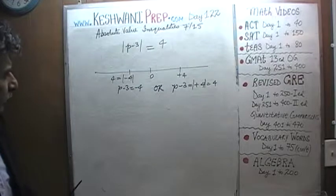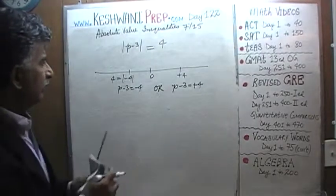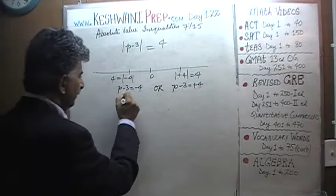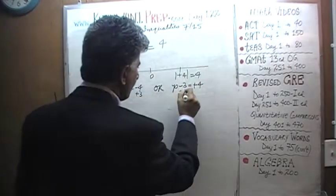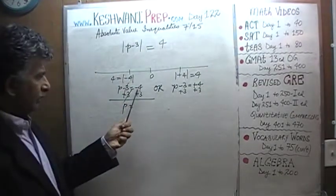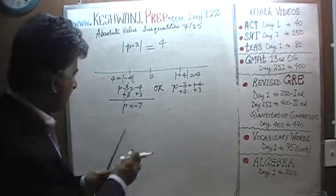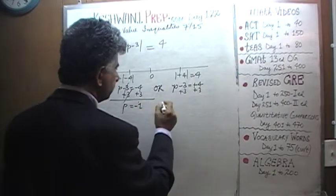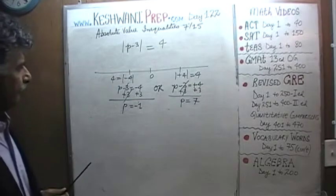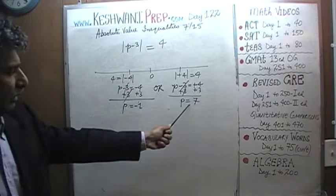We just solve for it. P minus 3 has to be either positive 4 or negative 4 — in both cases the absolute value of this quantity is equal to 4. Add 3 to both sides: 3 drops out and P equals negative 4 plus 3, which is negative 1. And here, 3 drops out and P equals positive 7. Those are the two values: P equals negative 1 and positive 7.